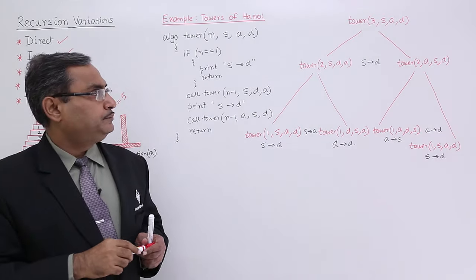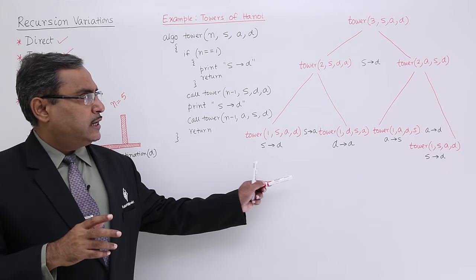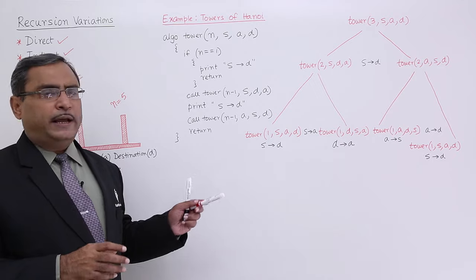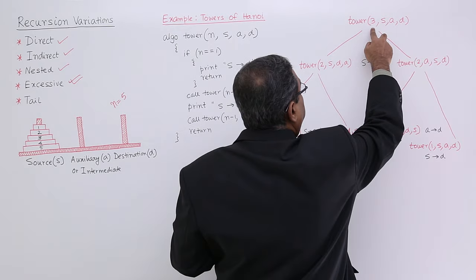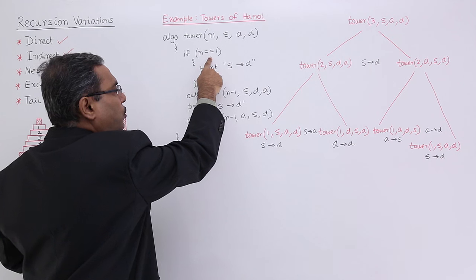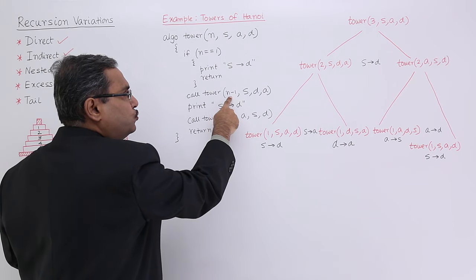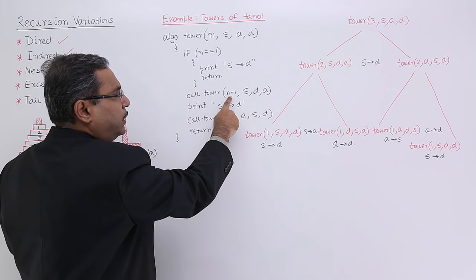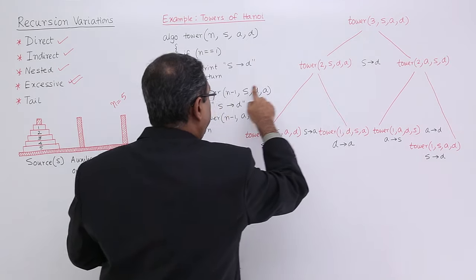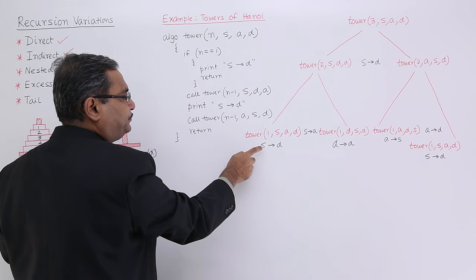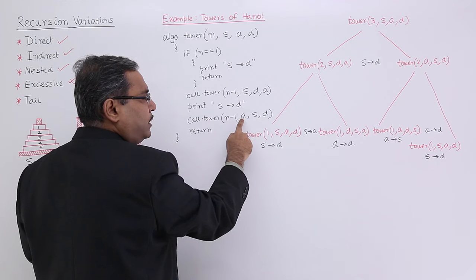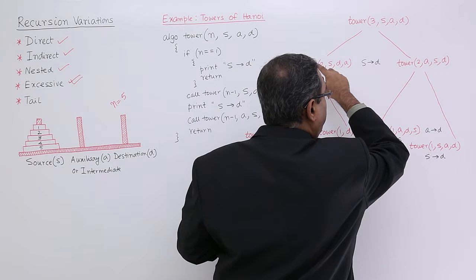Let us trace with n=3 to avoid a huge recursion tree. We call tower(3, S, A, D). Is 3 equal to 1? No. So we come down and call tower(2, S, D, A) — n-1 is 2, and the arguments swap so that source remains S, destination becomes A, and intermediate becomes D. This gets written out as part of the recursion tree.